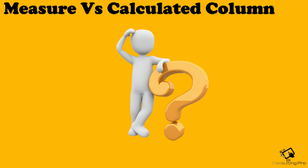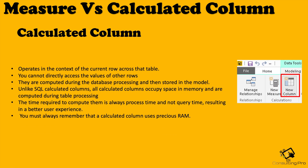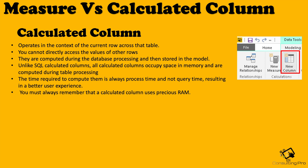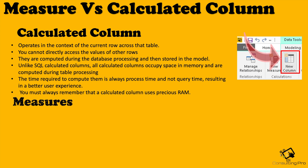Now let's understand the difference between measures and calculated columns. Calculated columns operate in the context of the current row across the table. As you can see on my screen, there's a red box showing 'New Column' — this helps us extend a table by adding columns based on certain conditions or logic. You cannot directly access values from other rows. They are computed during database processing and stored in the model. Unlike SQL, calculated columns require more space and do occupy space in memory — they are RAM-consuming — so we should be careful when using them. Whenever data is refreshed, they also get refreshed and occupy memory.